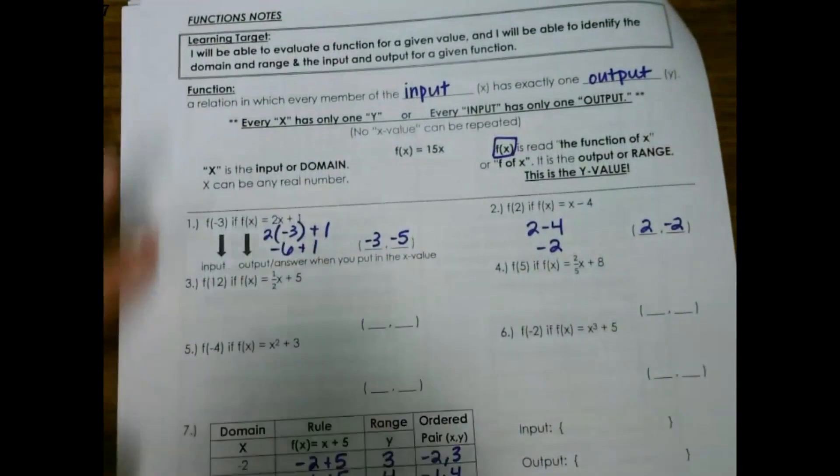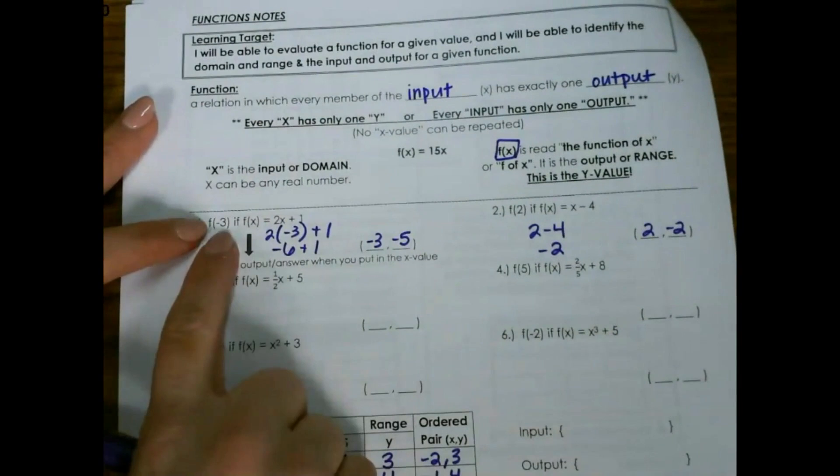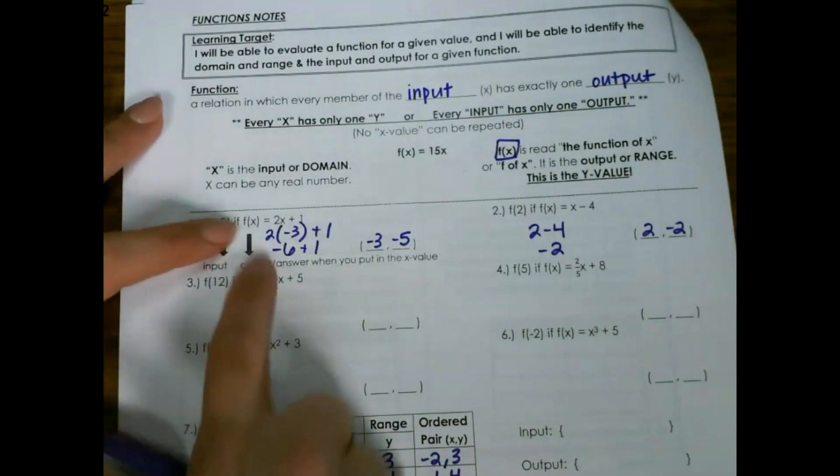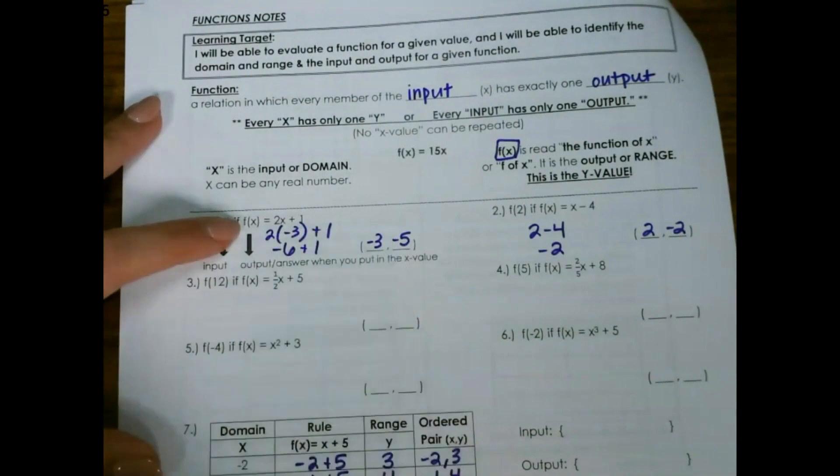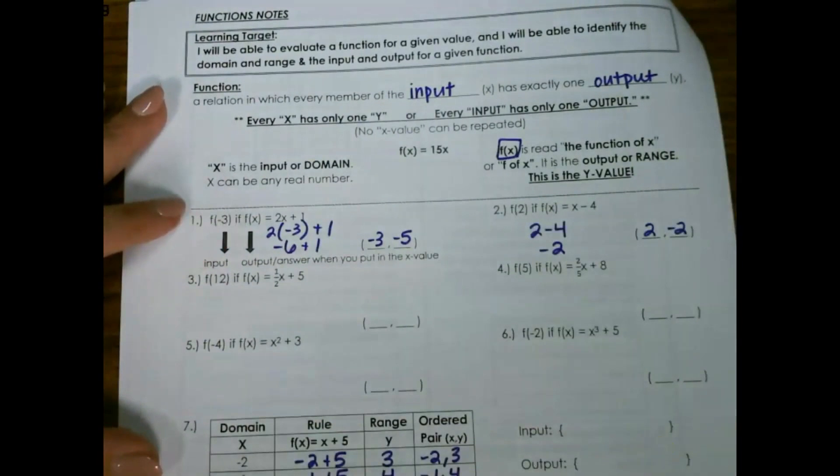So remember, this first number in parentheses is your input, and then f of x equals 2x plus 1. That would be your output or your y value. So you just simply substitute and solve.